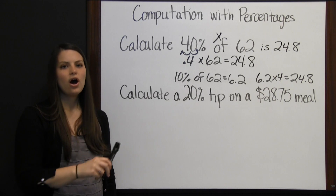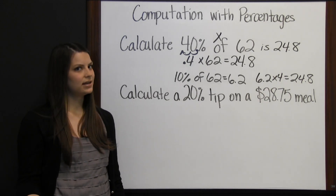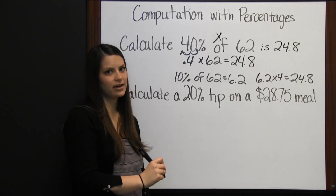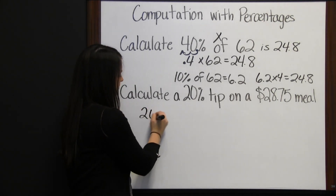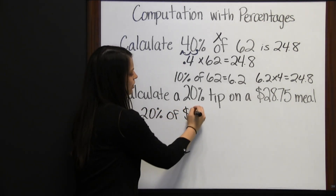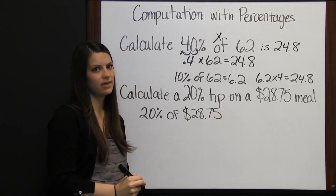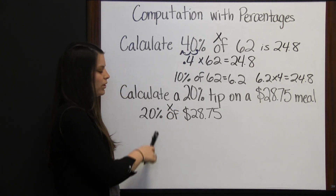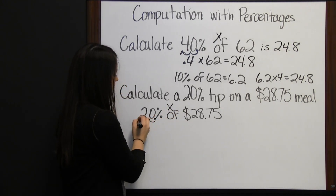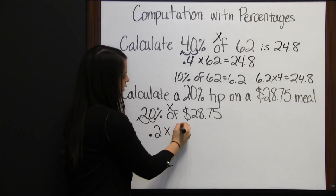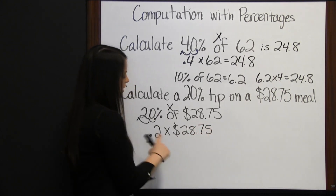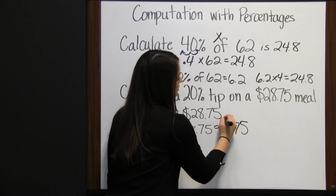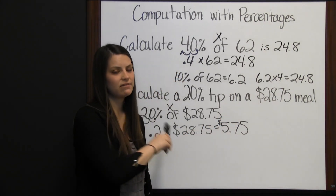Let's look at one more. Percentages are often used to calculate a tip at a restaurant. We're going to calculate a 20% tip on a $28.75 meal. We want to know what is 20% of $28.75. Converting 20% to a decimal — move it two places to the left — we're really doing 0.2 times $28.75. 0.2 times $28.75 is $5.75. So we would need to leave a $5.75 tip.